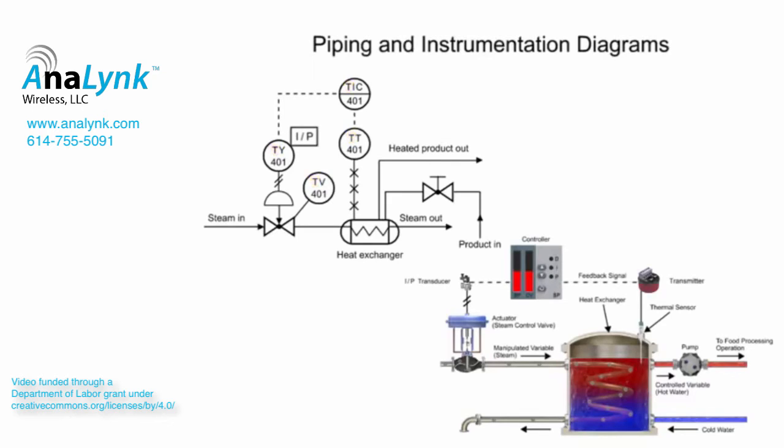The instrument connected to the heat exchanger contains two other types of information. The second letter in the functional identifier indicates it is a transmitter, and the balloon with no line inside its symbol indicates the device is field mounted.